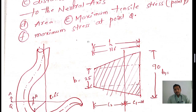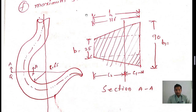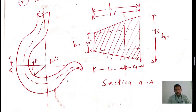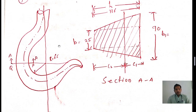Please observe this figure — this is the crane hook figure. At point D, the maximum tensile stress and the maximum shear stress are acting, and the maximum demoralizing force is acting at point P. Section A-A is indicated, and the inner radius is given.